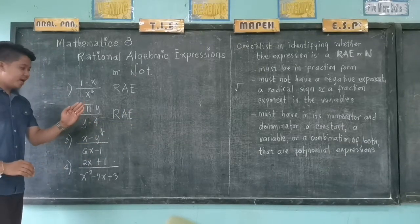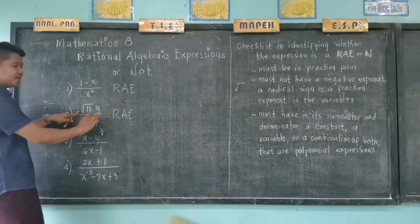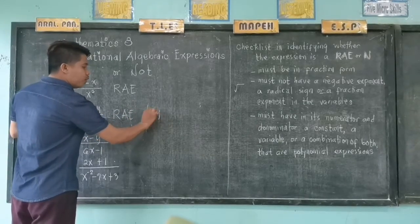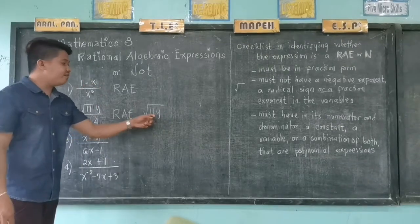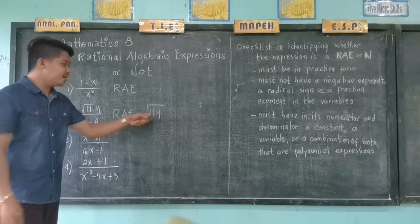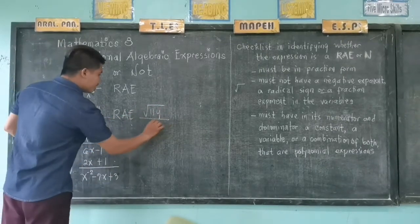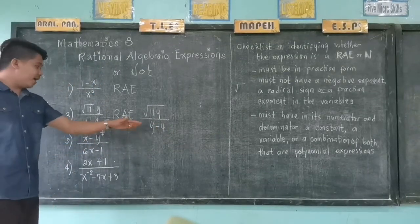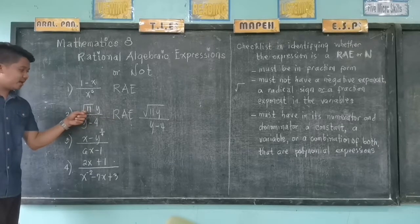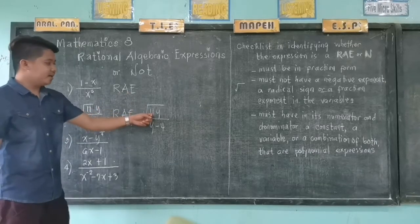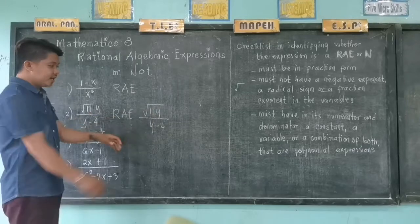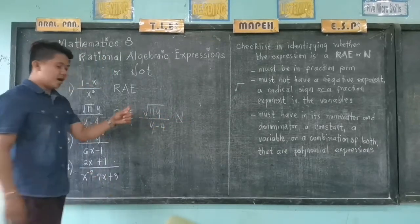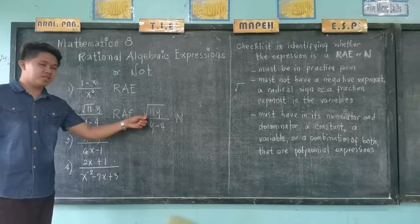However, if the case is this one — the square root of 11y, meaning 11y is under the radical sign, all over y minus 4 — if you compare, in the previous case, the radical sign was only on 11. But here, it's on 11y. So in this case, this is NOT a rational algebraic expression.